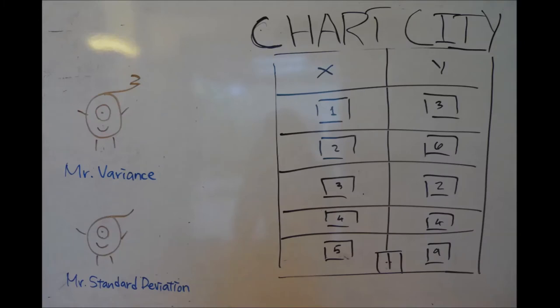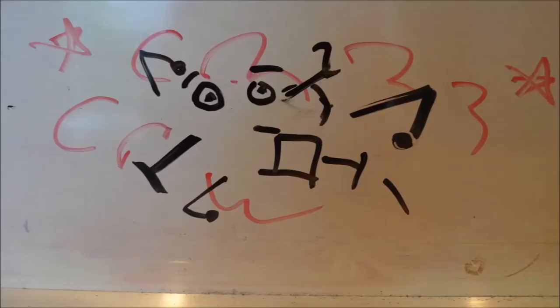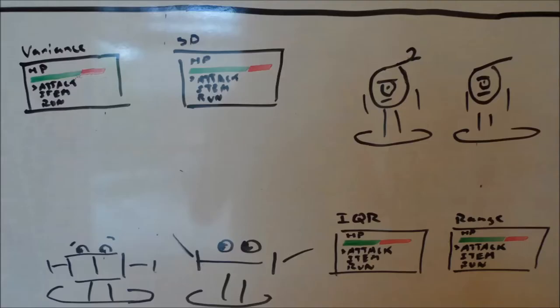The other family, the Egotistical Deviations, who live in Chart City, contain brothers Mr. Variance and Mr. Standard Deviation. Unfortunately, these two families do not have the best relations with each other since they constantly fight over which of them is a better measure of variability, especially between these statistical brothers.